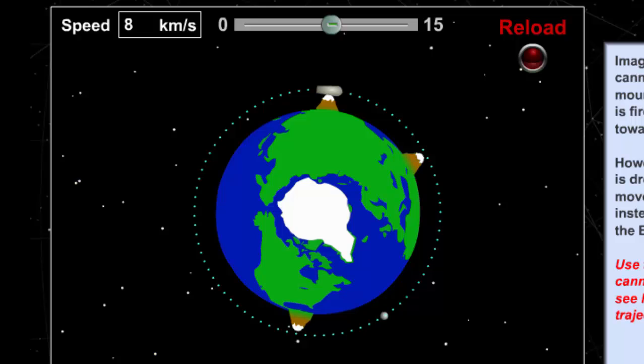So actually the cannonball is falling toward the Earth but it's falling in an orbit. We call this velocity orbital velocity, which is the minimum velocity needed to put the object in an orbit around the Earth. Its velocity is 8 kilometers per second and it depends on the distance between the object in orbit and the surface of the Earth.